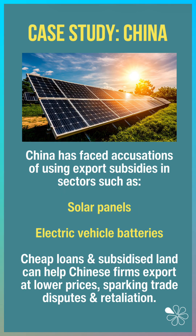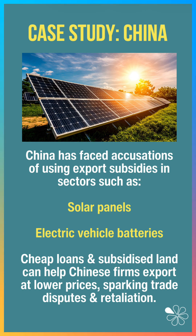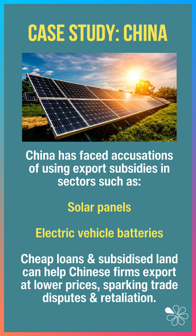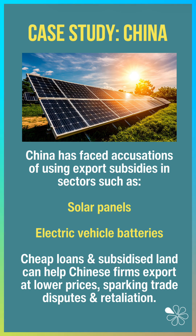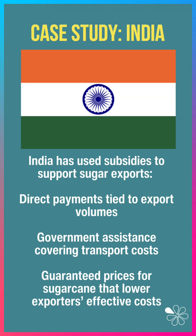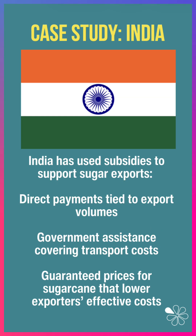A good example is China, which has faced accusations of using export subsidies in industries such as solar panels, electric vehicle making and batteries. Cheaper loans and subsidised land can help Chinese firms export at lower prices, sparking trade disputes and retaliation with the European Union.